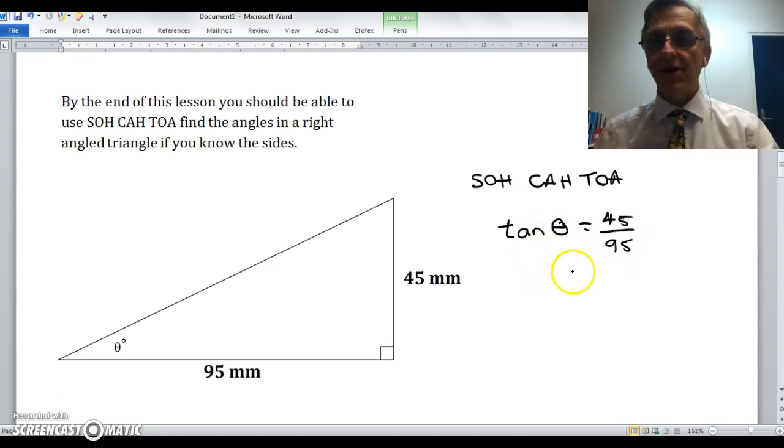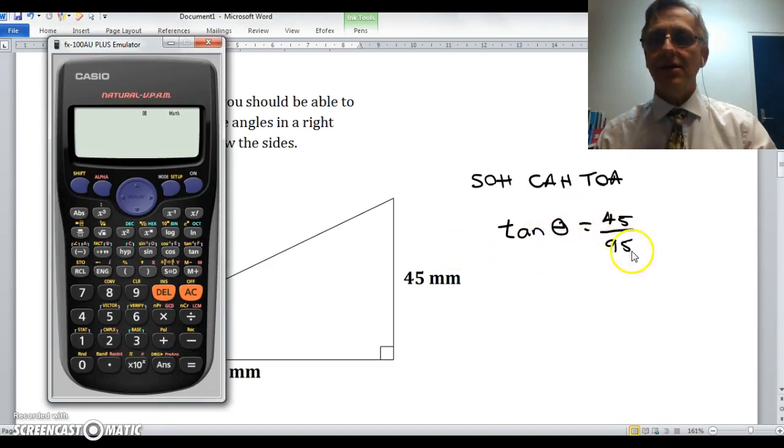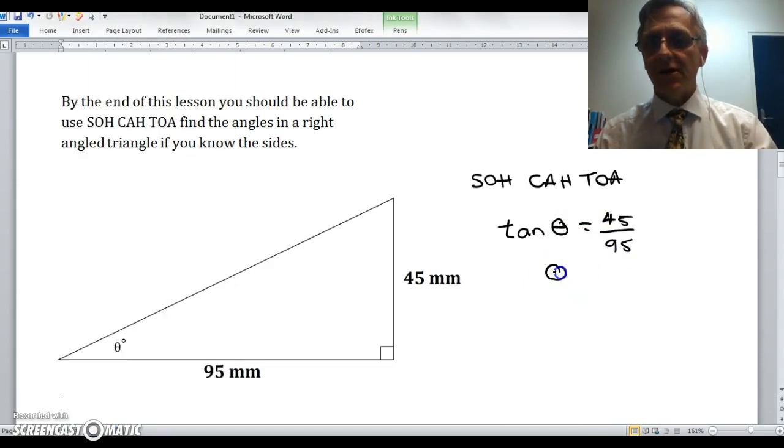So that means that in order to find theta I need to work backwards. It's not like this is tan times theta, I don't divide that by tan, that doesn't make any sense. What I need to do is do the opposite of tan to find theta. So what I do is I write down that I'm going to find theta, and it is going to be the opposite operation, it's called inverse tan of 45 over 95.